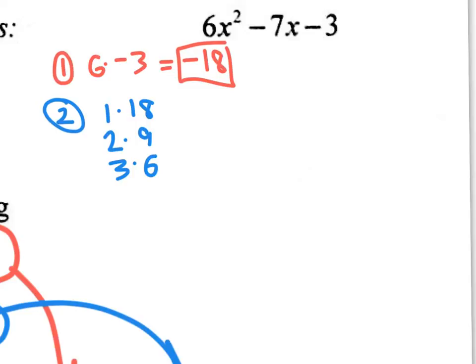These are all the possibilities, but we want it to be negative 18. So let me put a negative in front of the 1, 2, and the 3. And step 2 is think of the multiples of the number from step 1 that combine together to give you the B value, which is negative 7. So which pair of numbers combines together to give you negative 7?